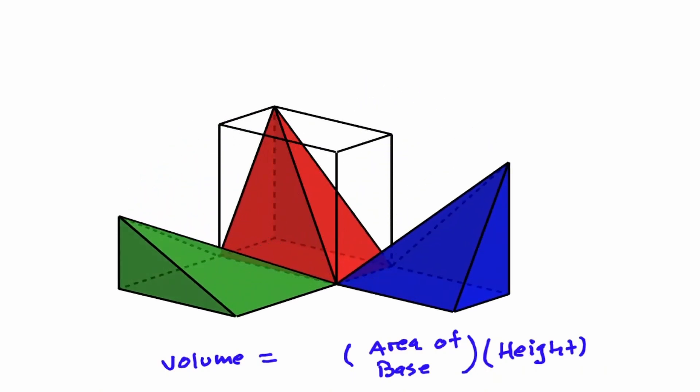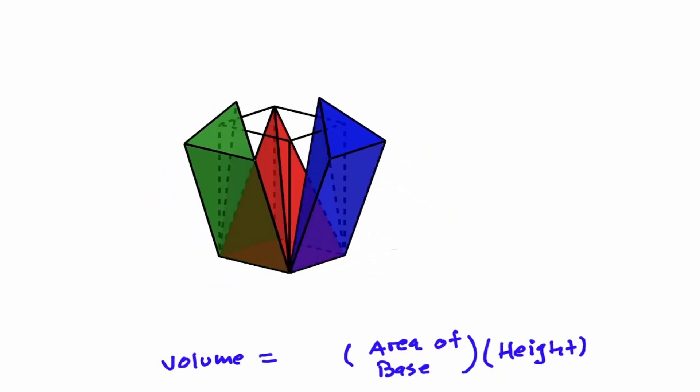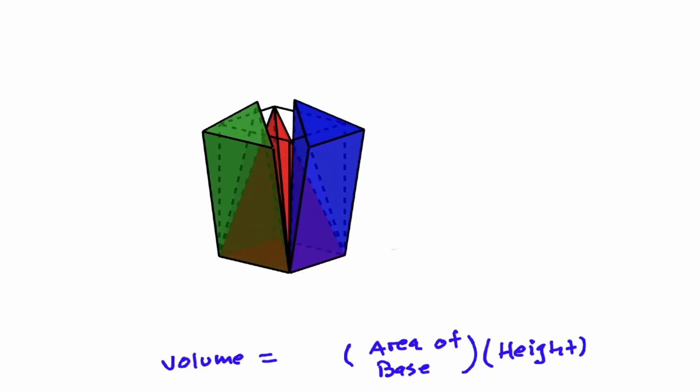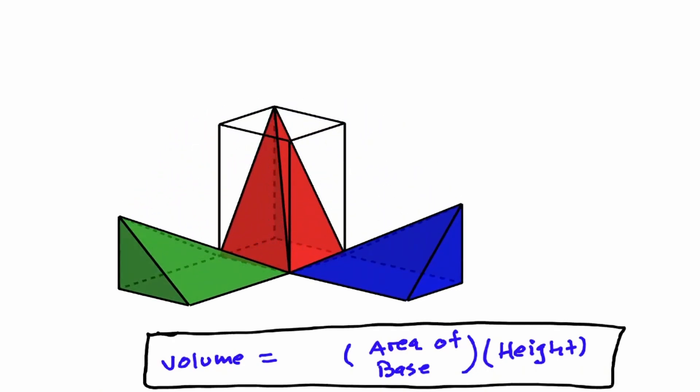Even if we change the width, we're still going to be able to fit three pyramids inside this prism. So if the formula below is to find the volume of a prism, and we have established that we can fit three pyramids inside a prism, then we can say that the volume of a pyramid is one third of a prism.